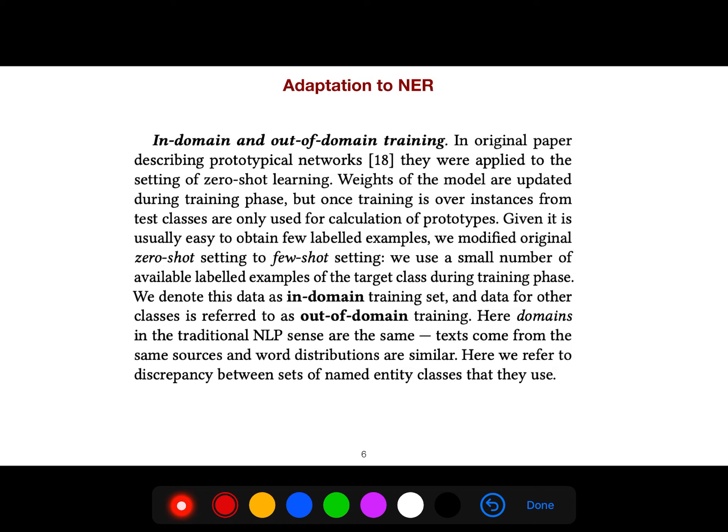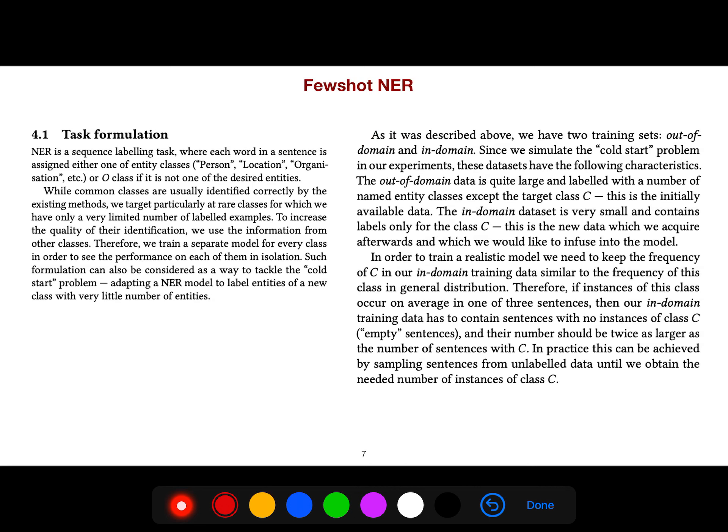They denote this data as in-domain training data, and data from other classes referred to as out-of-domain training. Here domains in the traditional NLP sense are the same—texts come from the same sources and word distributions are similar. Here they refer to the discrepancy between sets of named entity classes that they use.